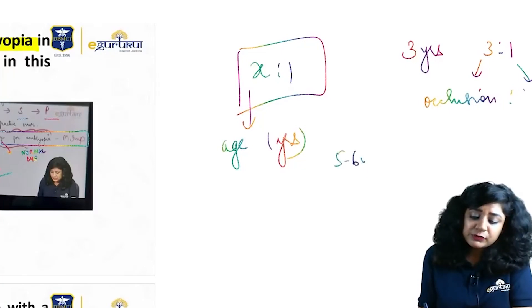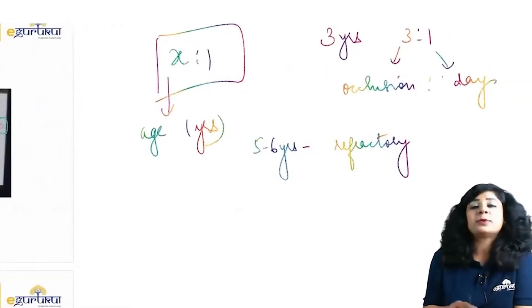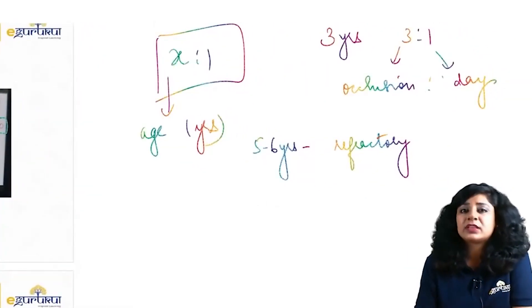It becomes refractory after five to six years. So it's very important that you should give the proper treatment of amblyopia within the time.